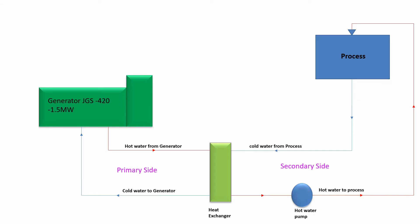If you are familiar with the power plant, this is a schematic diagram of a generator in which we use the waste heat to heat our process water. For example, we have a JGS420 1.5 MW generator.